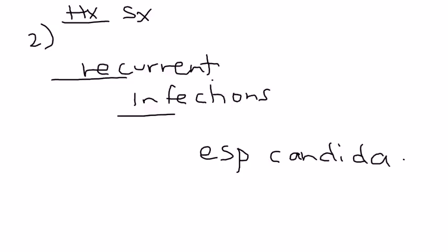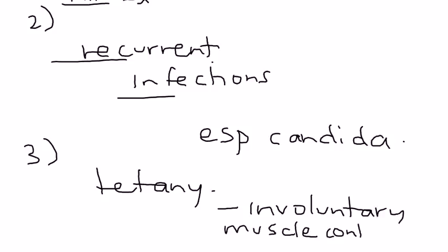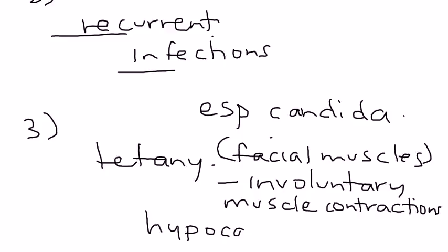The next part of the presentation is tetany. Tetany is basically involuntary muscle contractions, kind of like twitching. You can see this on the person's face, as the facial muscles are oftentimes involved. This happens because of hypocalcemia. Remember the parathyroid gland is not properly developed, and the parathyroid gland is responsible for increasing calcium levels in the blood. So when you have hypocalcemia in DeGeorge syndrome, you can get tetany.